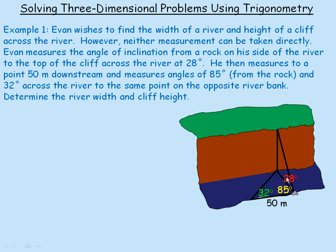That is sufficient information to find the distance across the river and the height of the cliff. We'll label the river distance r and the cliff height h. To find r, we work in the flat triangle on the surface of the river. The only unknown angle is the third one — we know 32° and 85°, and since angles in any plane triangle sum to 180°, we can find it.